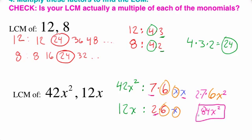Final answer, 84x squared. And you want to double check. Again, the check is, is 84x squared a multiple of 42x squared? Yes, it is. Is it also a multiple of 12x? Yes, it is.